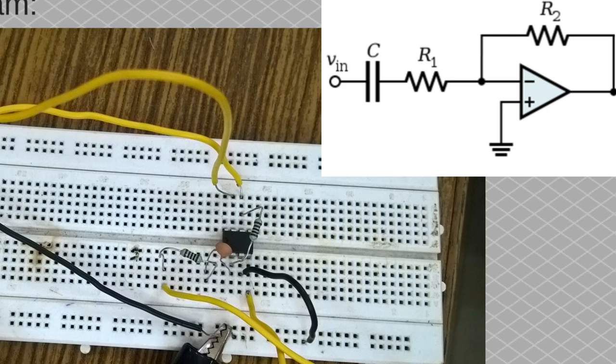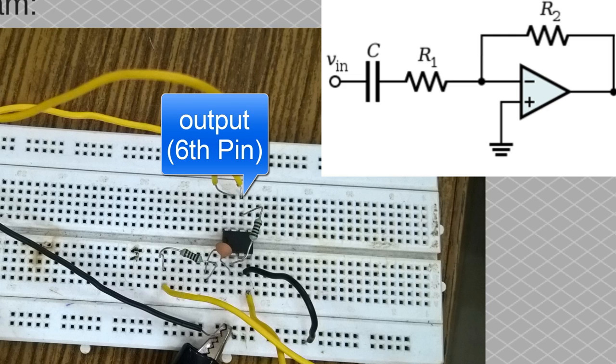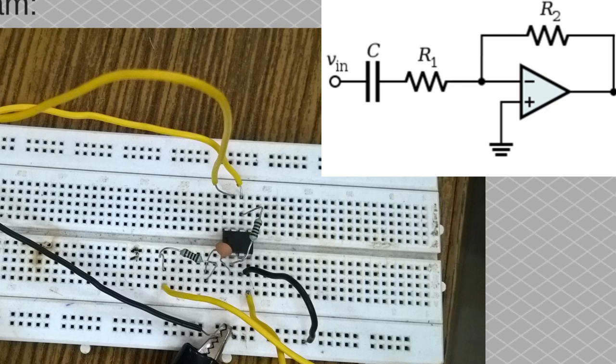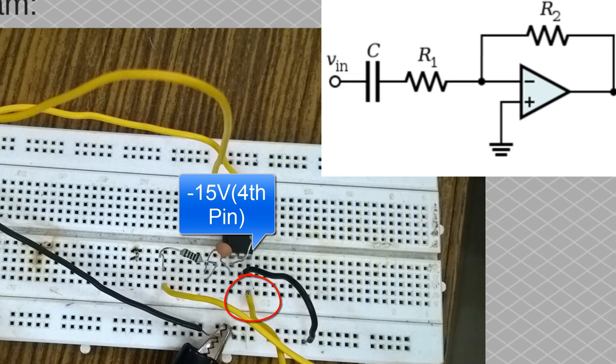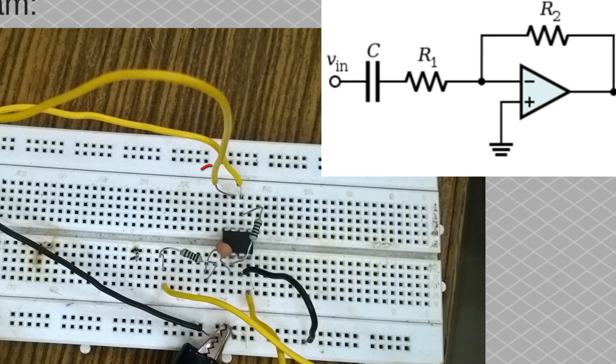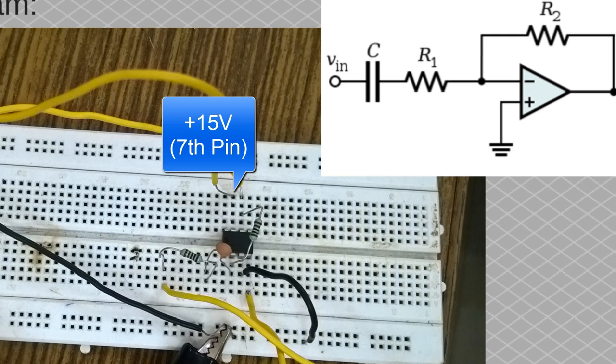The sixth pin is for the output, so I am taking the output from the sixth pin and I am observing it on the DSO, as can be seen from this wire right here. The fourth pin of this operational amplifier IC has been connected to the negative terminal of the power supply providing minus 15 volts, and the seventh pin of this operational amplifier IC has been connected to the positive terminal of the power supply providing plus 15 volts.